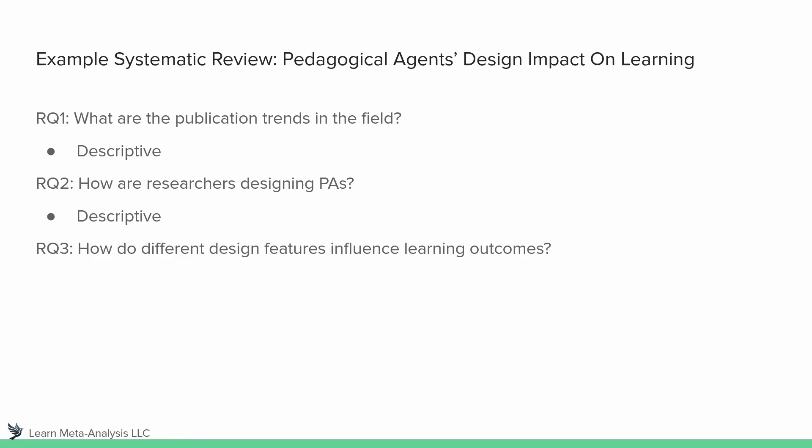What might we do to actually facilitate this analysis? In the area of virtual characters and pedagogical agents, we have an existing design framework published by Heidegg and Clairvout in 2011. What we might do is take our data and code it based upon this framework. That gets us into useful groupings — I'll use the word clusters or groups — where you can start grouping your studies based upon what level of the design framework they're at and what they are actually examining. So that gets us our first step.